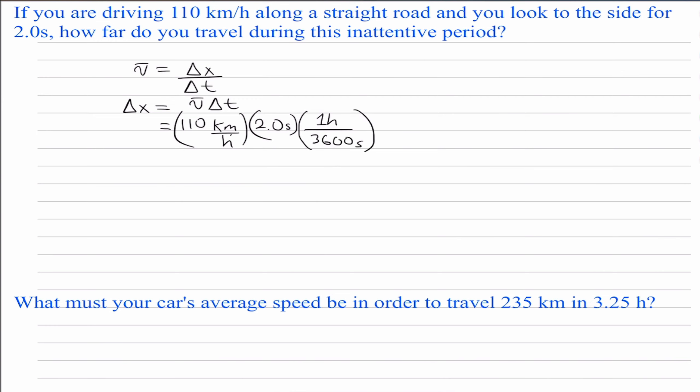So we then go ahead and we cancel the hours, cancel our seconds, and we end up with kilometers. So then the distance traveled is equal to 0.061 kilometer.